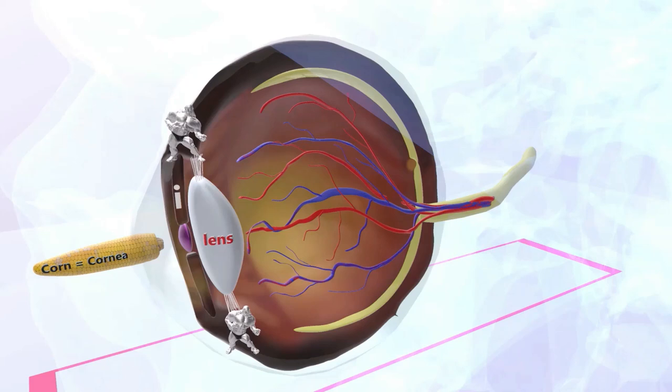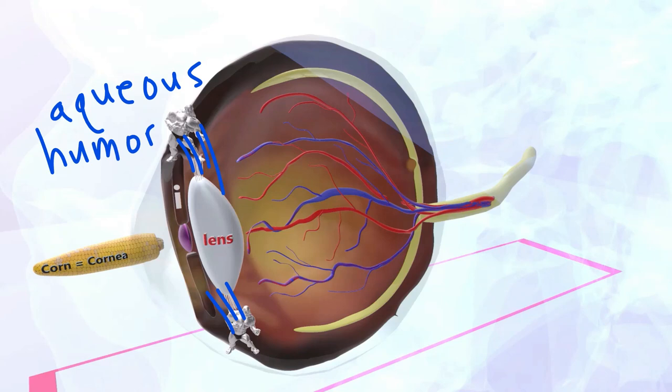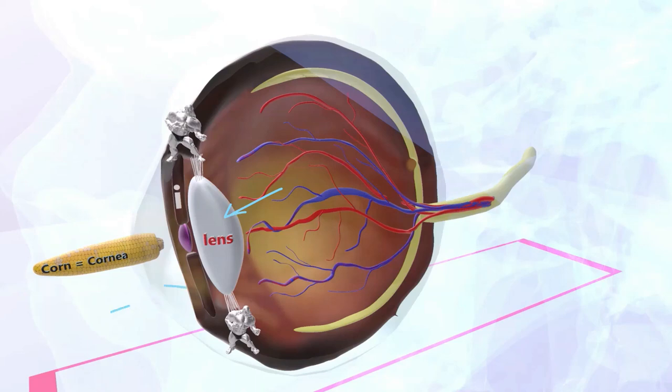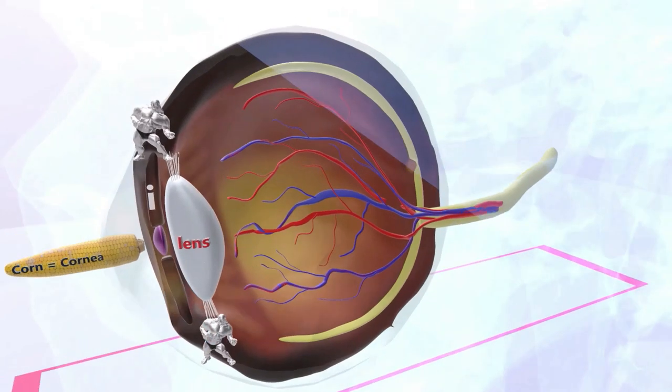The aqueous humor travels through this area over here called the posterior chamber. This is between the lens and the iris, and it travels through the pupil into the anterior chamber. From there, it drains into the trabecular network at the base of the iris. The remainder anatomy of the eye is fairly simple.